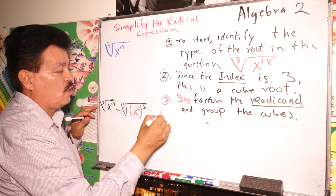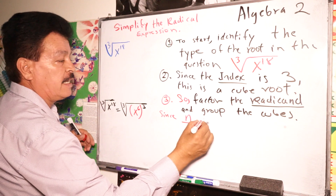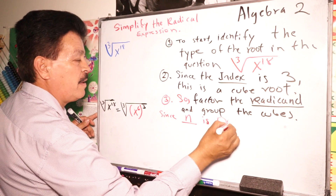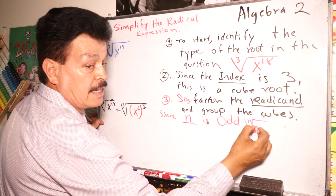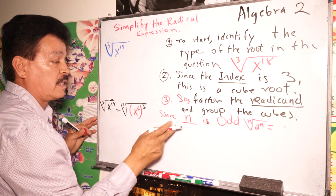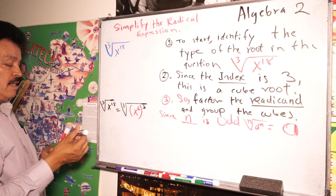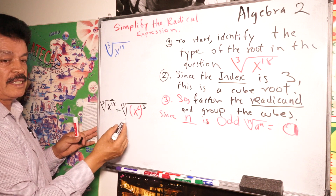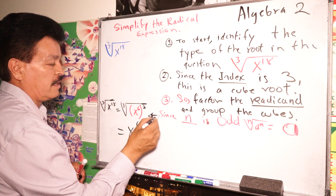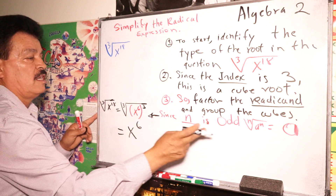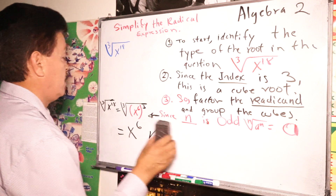Since the index n is odd, we apply the rule: the nth root of a to the n equals a. So the cube root of (x^6)^3 equals x^6. That is our answer for this problem.